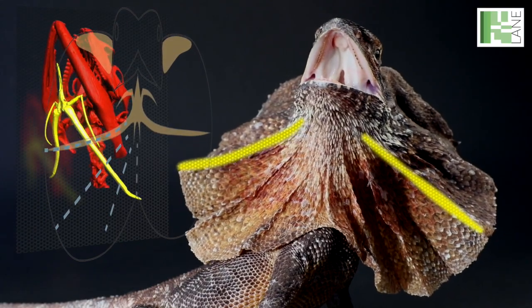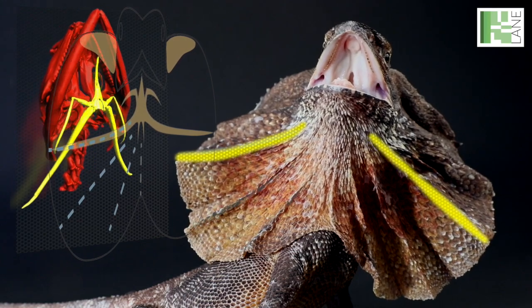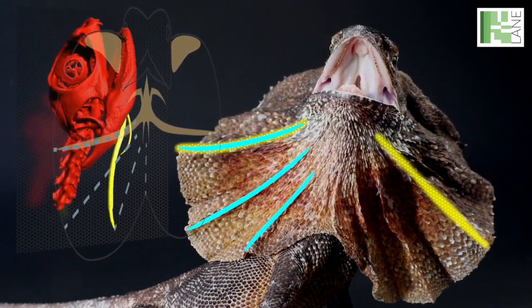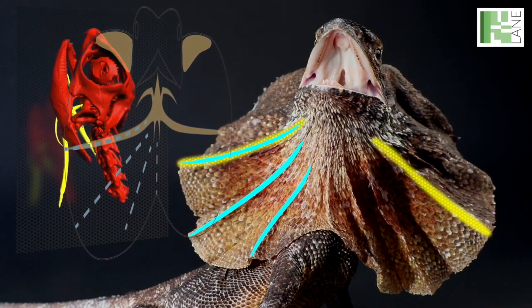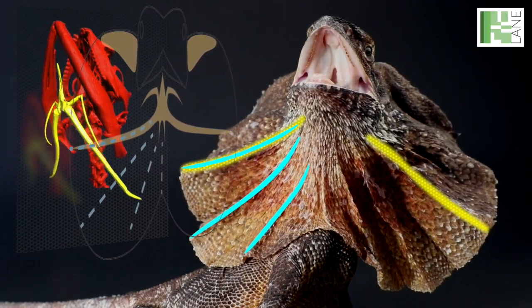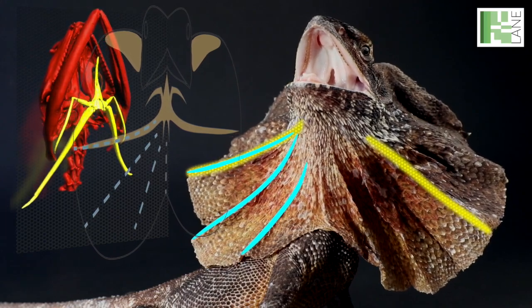Folding on each side of the frill occurs at three pre-formed ridges, but it remains unclear which ancestral structure evolved to become the dragon's frill and how the ridges in the frill form during development.